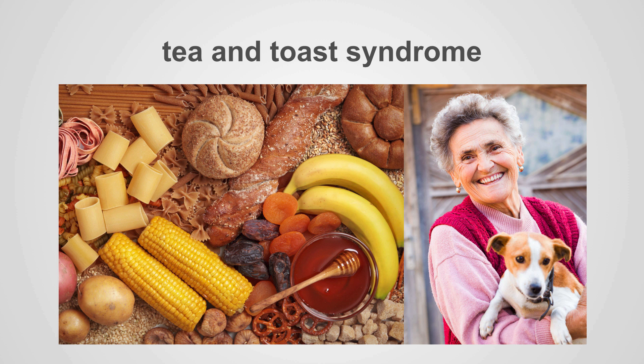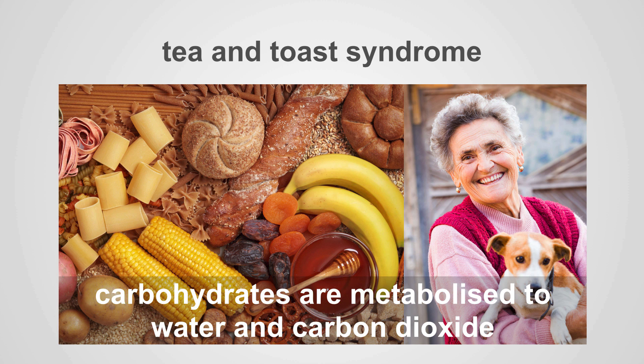One of the syndromes where we see this is called tea and toast syndrome. This is typical for older women living alone whose diet is really just carbohydrates — a lot of bread, grains, maybe some fruit, but very little solute and no protein. The problem with carbohydrates is they are metabolized to water and carbon dioxide. Water is just solvent and carbon dioxide is exhaled — no solute for the kidney to excrete.